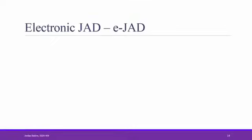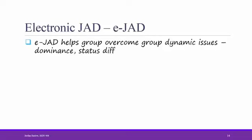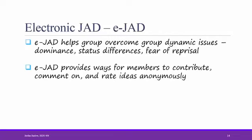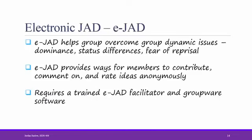One way to overcome some of these group weaknesses is to use Electronic JAD or EJAD. EJAD helps groups overcome group dynamic issues such as dominance, status difference, and fear of reprisal. When people sit in groups, they're usually not as eager to share information as they are in one-on-one interviews. Electronic JAD provides ways for members to contribute, comment on, and rate ideas anonymously. However, it does require a trained EJAD facilitator and some specialized group work software.